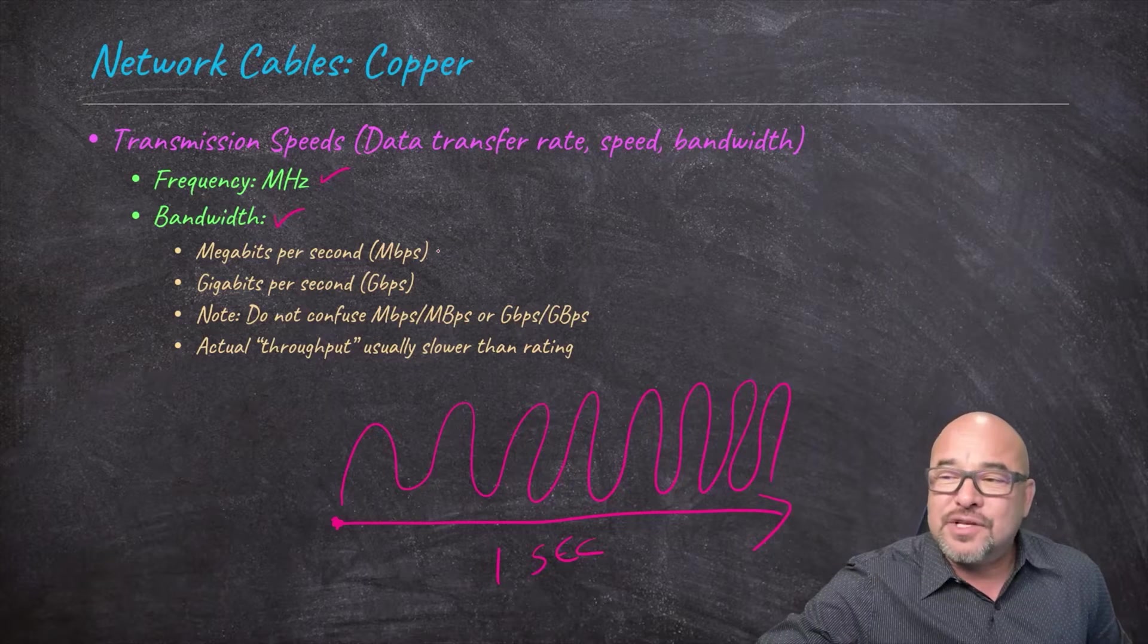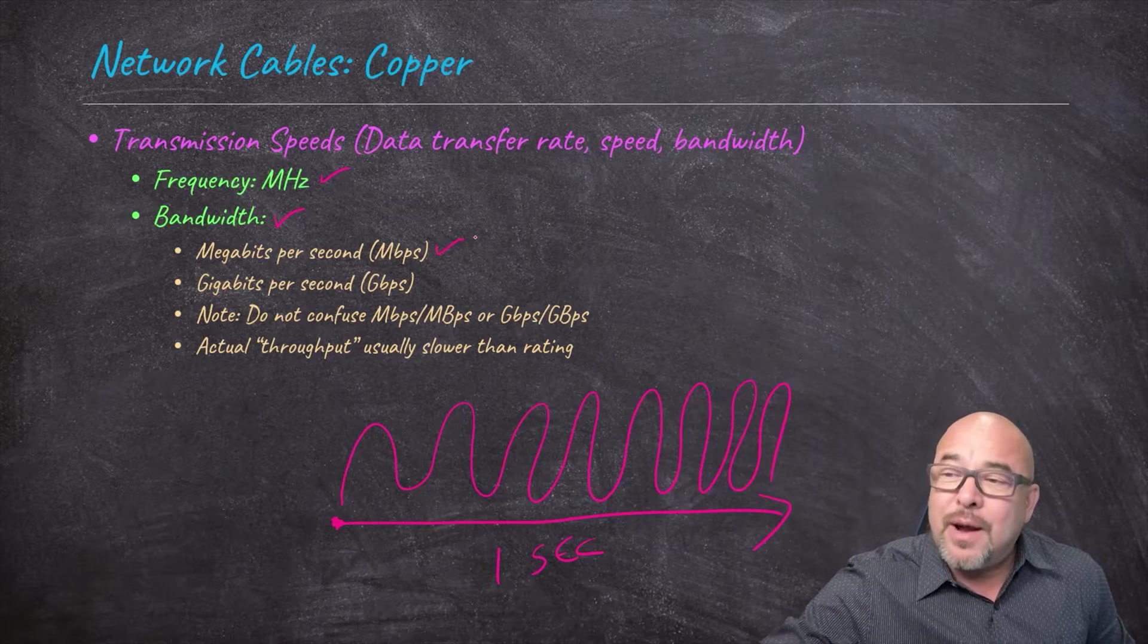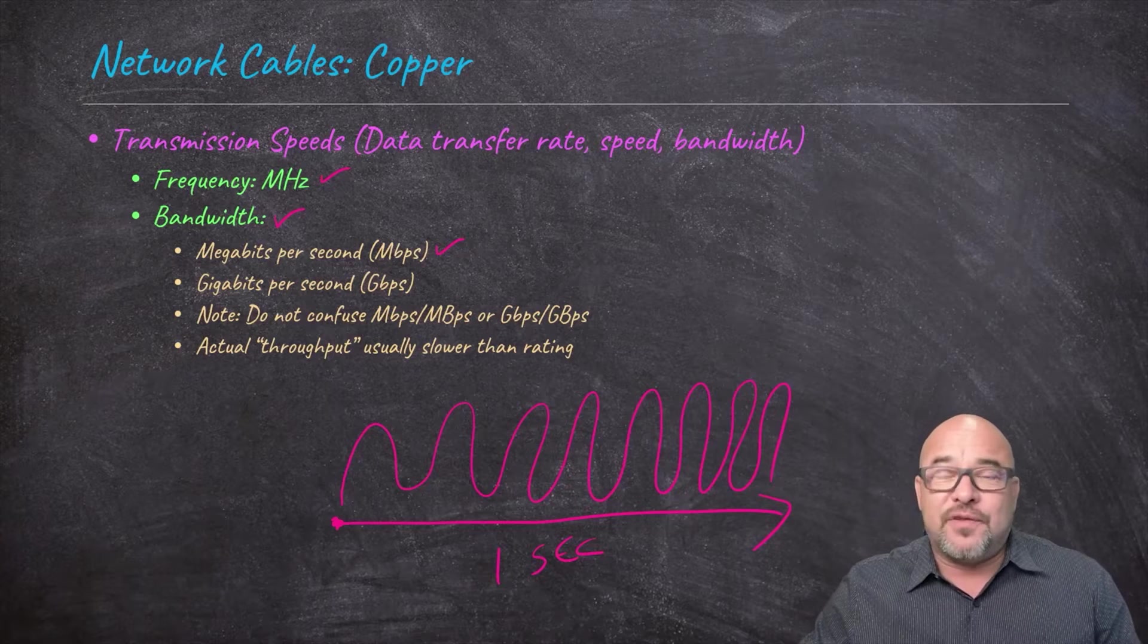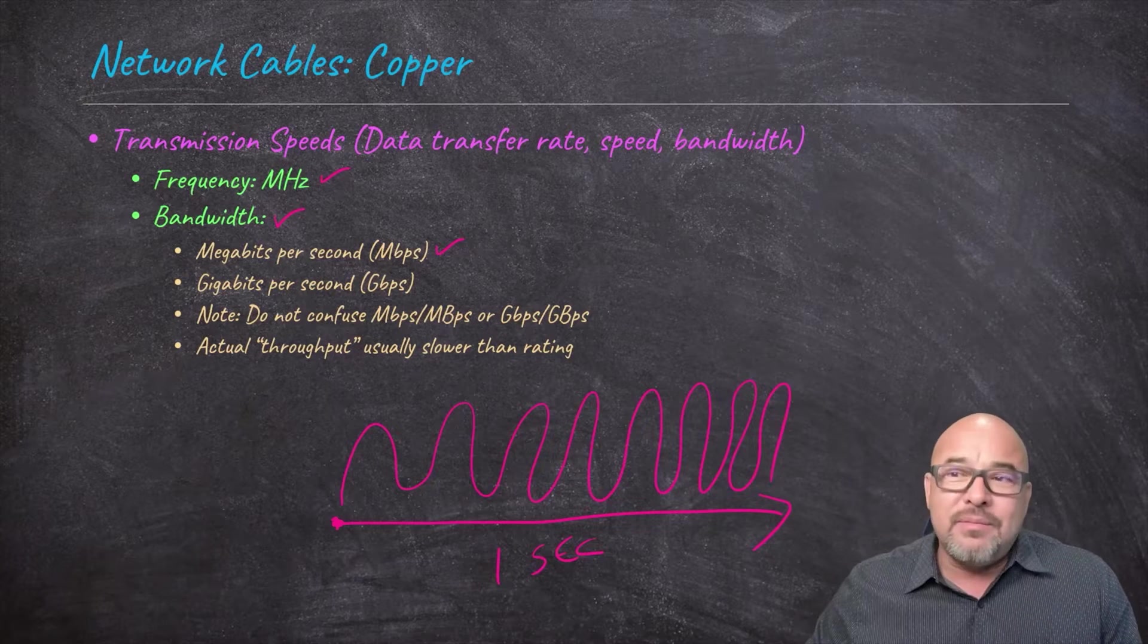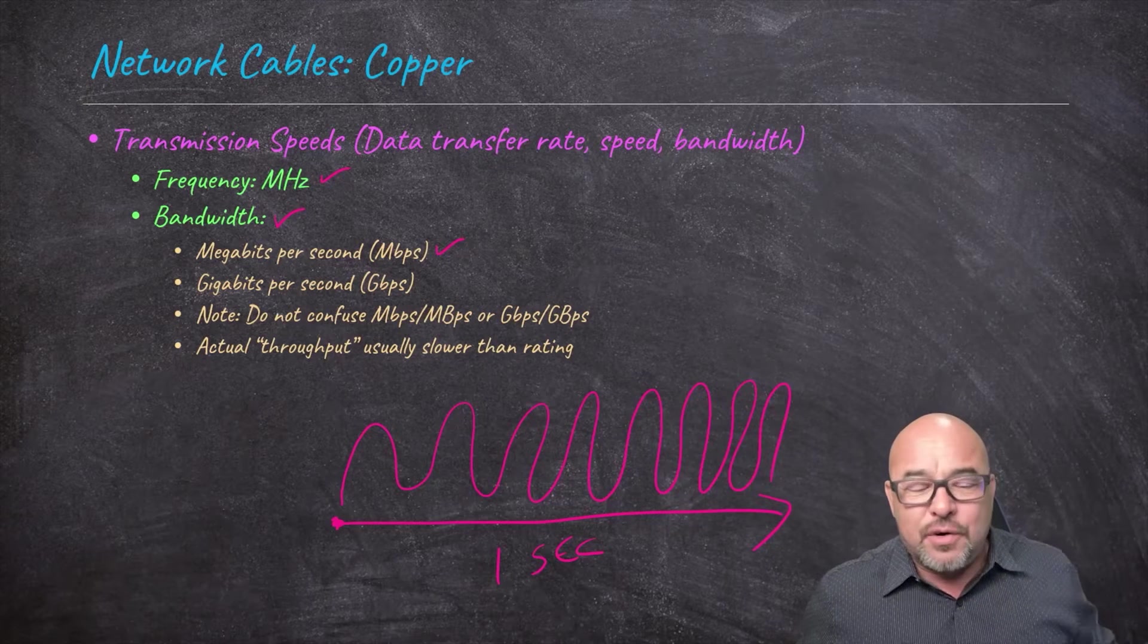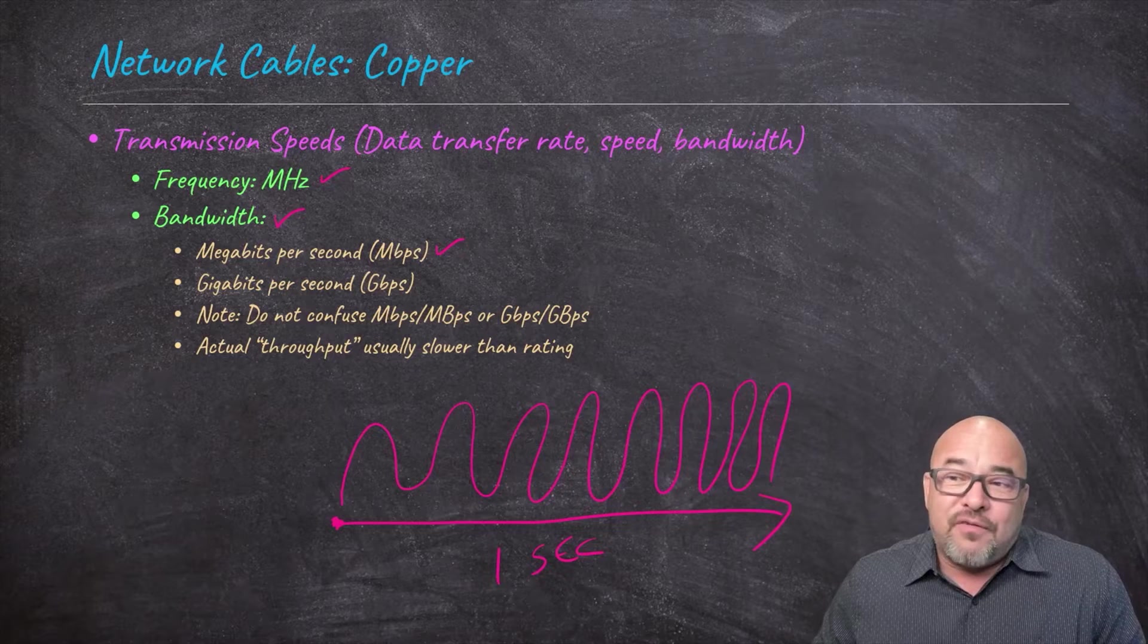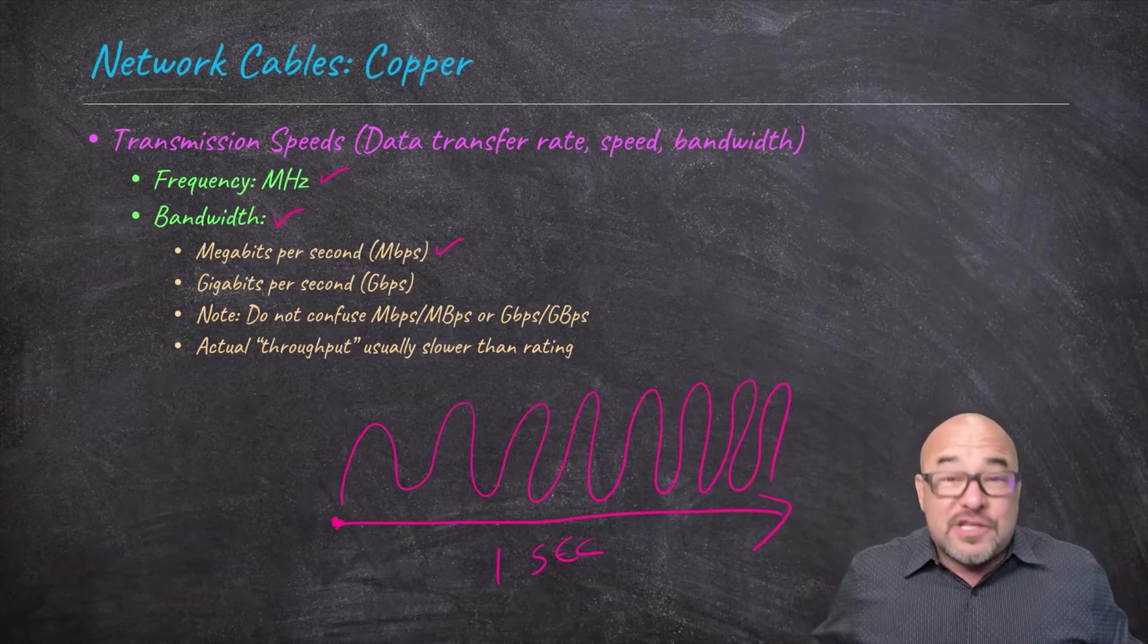Now, there are other factors that will come into play here. The kind of copper you're using, the thickness of the copper, whether it's shielded, and some other things we'll talk about here in the future. But I just want to point out, first of all, megahertz. That will have a factor in how fast something goes. Bandwidth here, as we look at this, we have measures of this. Normally, we talk about it in terms of megabits per second.